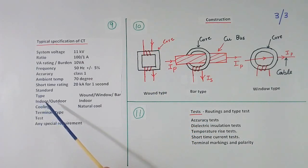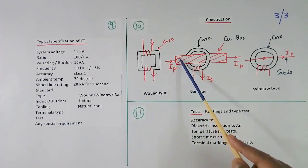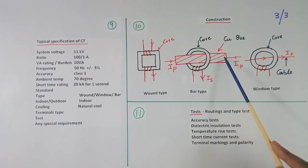Then we have to tell indoor or outdoor. Generally this CT will be outdoor. This is indoor. Suppose you write outdoor, then CT should be made waterproof and sunlight proof. Then terminal type. What type connection we want here. What size of hole will be here. Then test. What are the test we have to do or any other special requirement. We have to write.